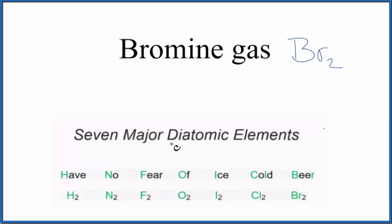It's what we call a diatomic element. There are seven major diatomic elements, and bromine is one of them.